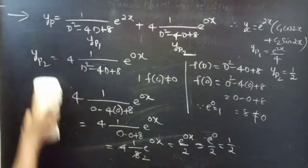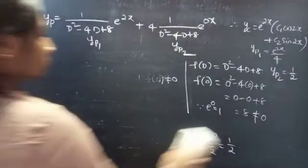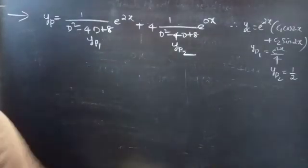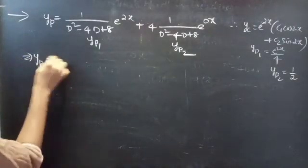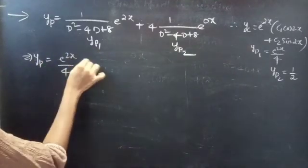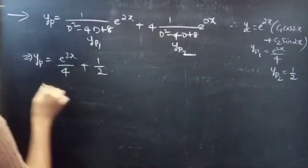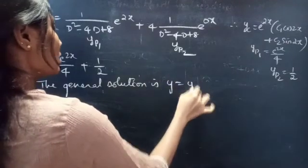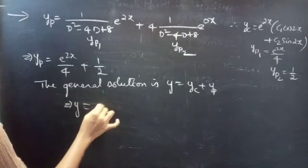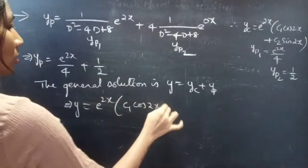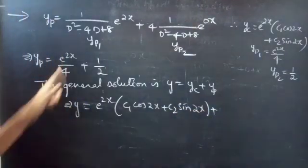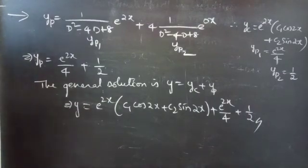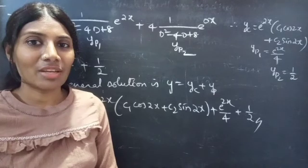Therefore yp = yp1 + yp2 = e^(2x)/4 + 1/2. The general solution is y = yc + yp, which gives y = e^(2x)(c₁ cos 2x + c₂ sin 2x) + e^(2x)/4 + 1/2. This is the required solution. We have solved a problem from higher order linear differential equations; hope you understood. See you in the next video, bye bye.